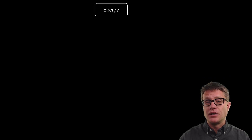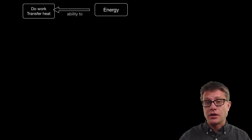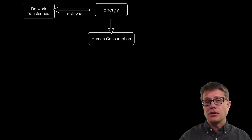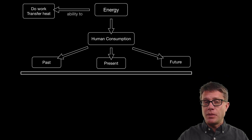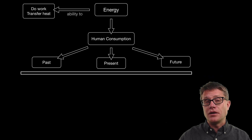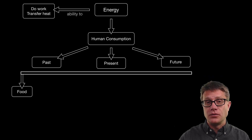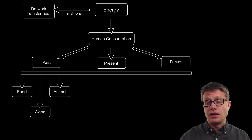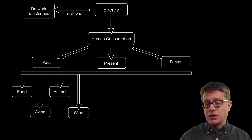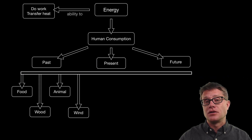As we talked about in the last video, energy is the ability to do work or transfer heat. If we look at human consumption of energy over time, we can learn lessons from the past as we plan towards the future. Where did our energy come from to begin with? Just like that pizza, it came from our food. But it did not take long before humans discovered fire and unlocked the power found within wood. We domesticated animals, we used wind power early for grinding grain and moving water, and our societies started to grow.